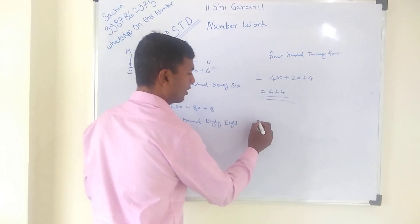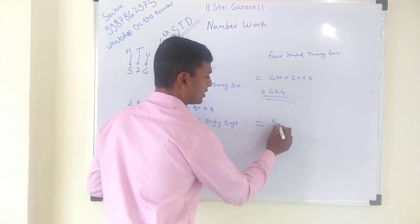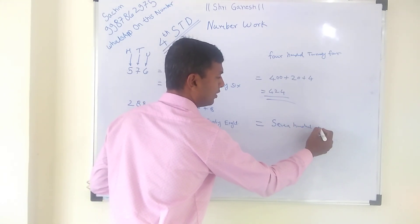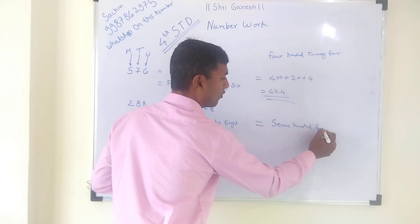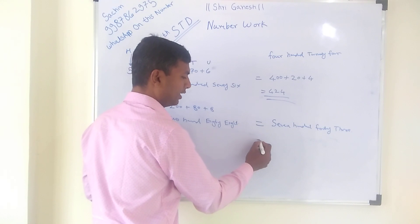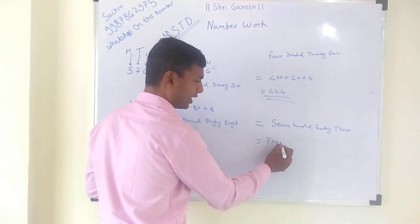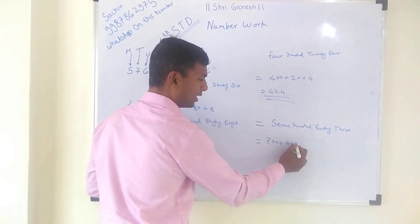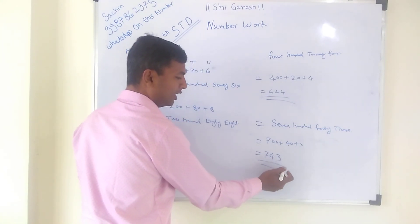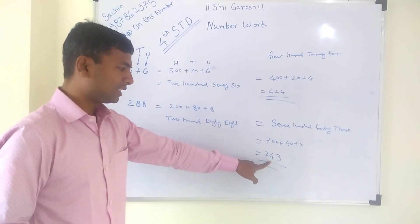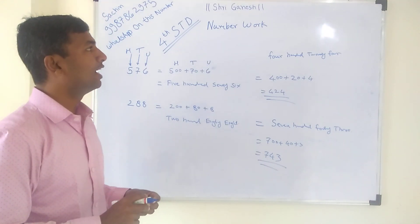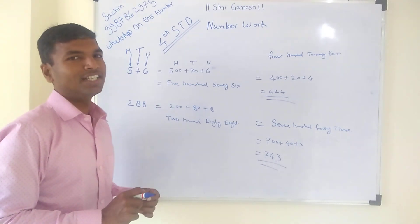One more we will go through. I write 7, 4, 3. How to read out that? 700 plus 40 plus 3, so it will become 743. Very easy. This is the unit place, this is the 10th place, and this is the 100th place. This way you can read or write the 3-digit number.